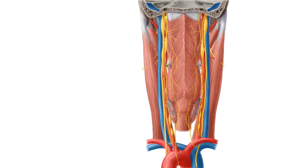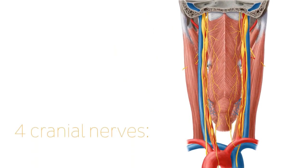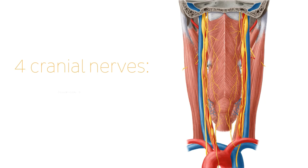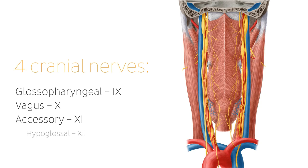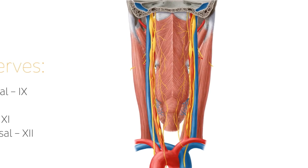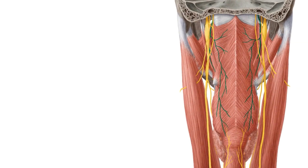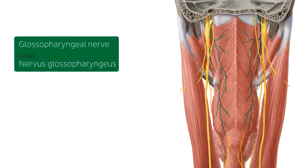On this image we're going to be able to describe four cranial nerves including the glossopharyngeal, the vagus, the accessory, and the hypoglossal nerve. Let's start by highlighting the first structure you see now on the screen highlighted in green — one cranial nerve, the glossopharyngeal nerve, which is the ninth cranial nerve.